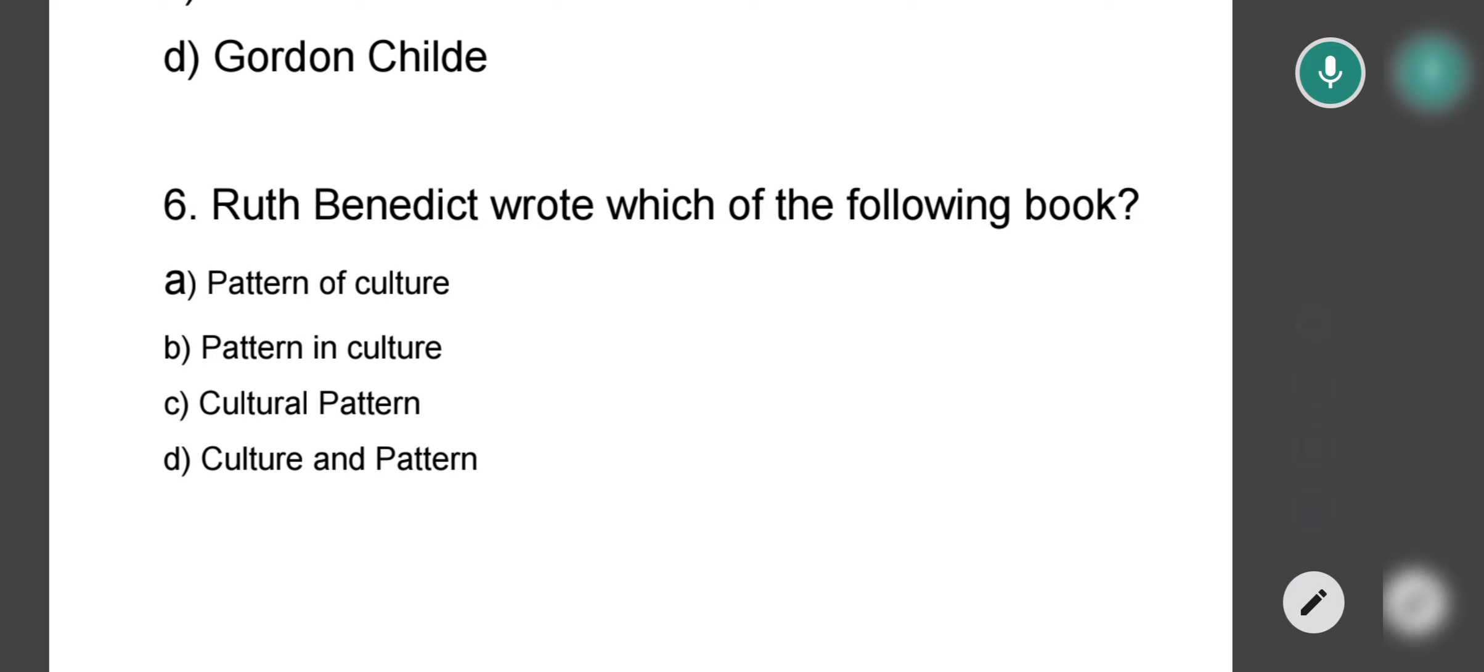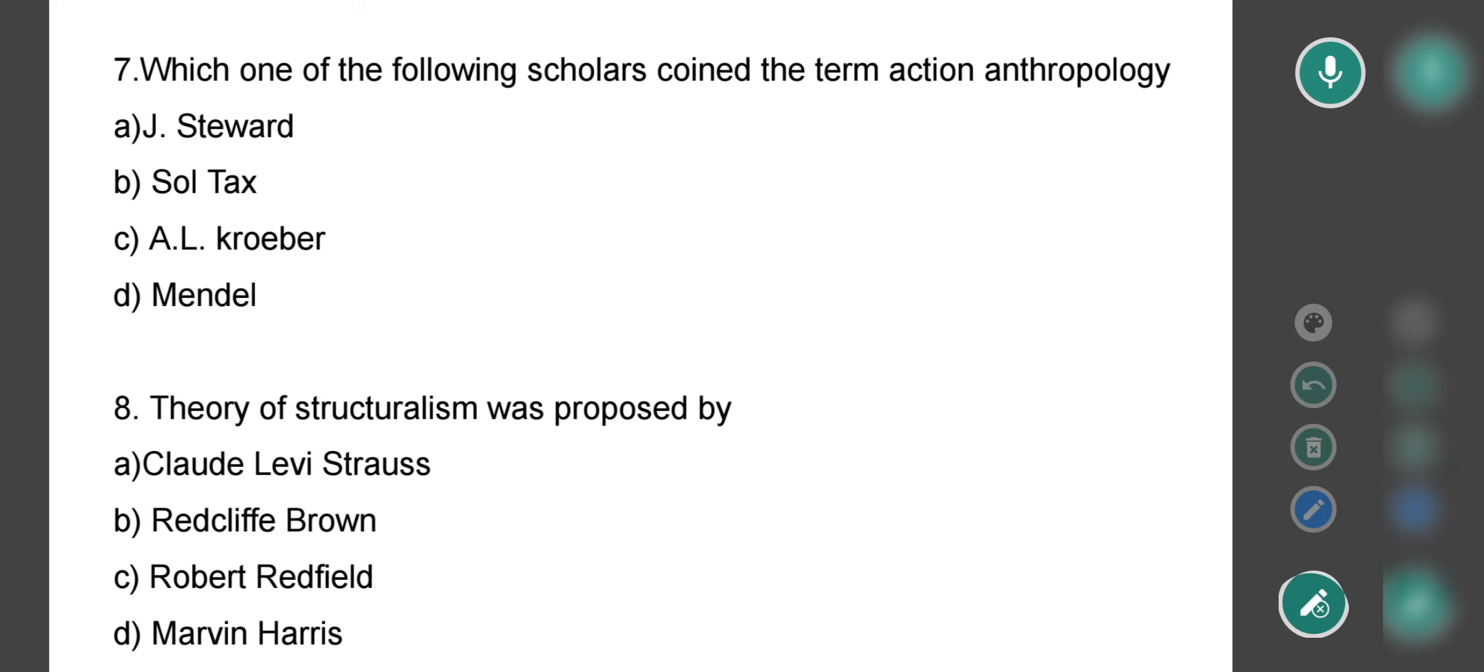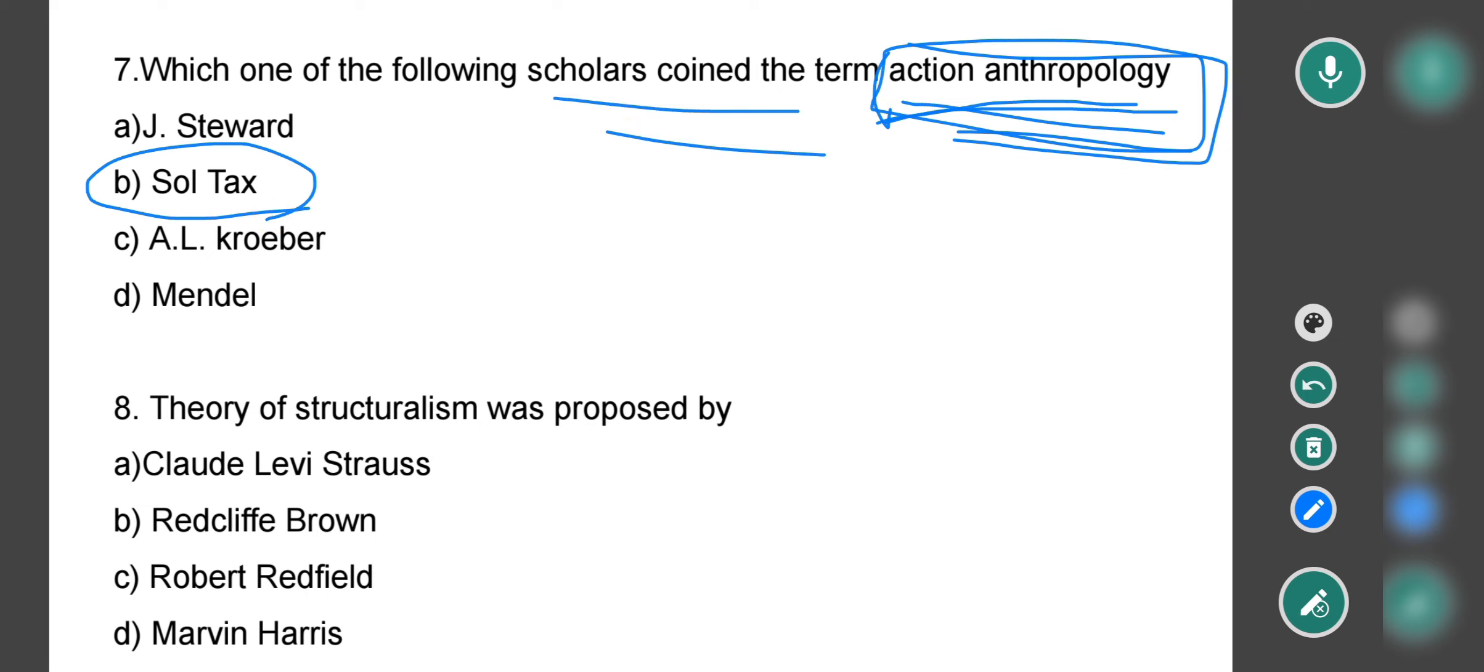Let's see the next question. Question number seven asks which of the following scholars coined the term action anthropology? Which scholar has given the action anthropology term? Options are Julian Steward, Sol Tax, A.L. Kroeber, and Mendel. The correct option is option B, Sol Tax. Sol Tax coined the action anthropology term.